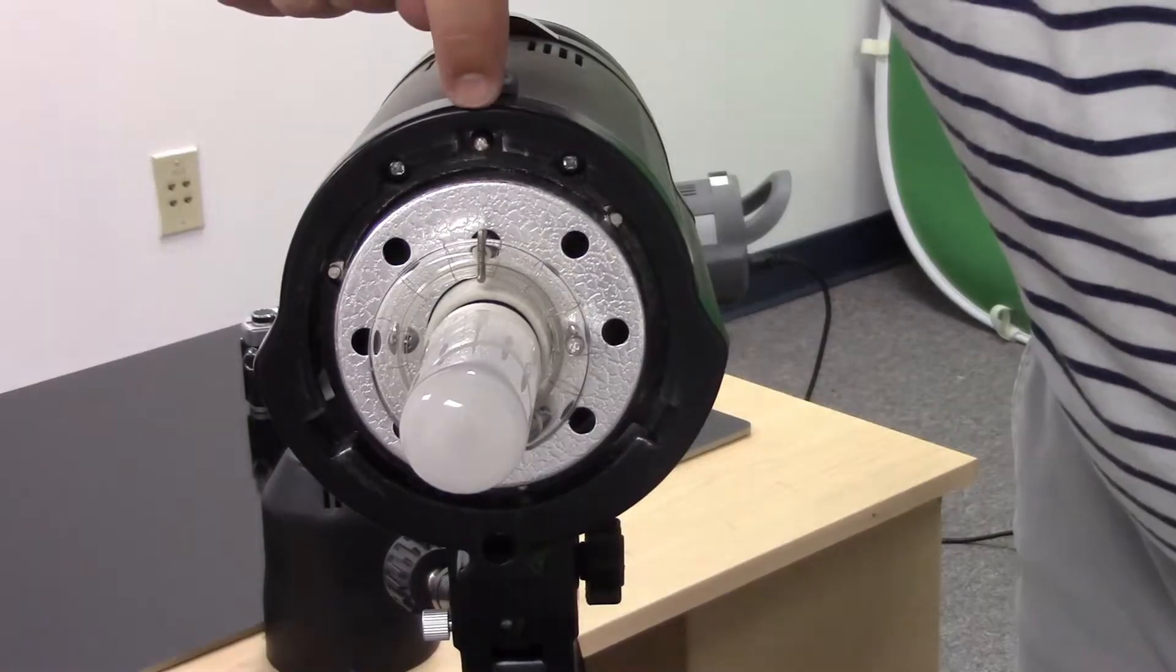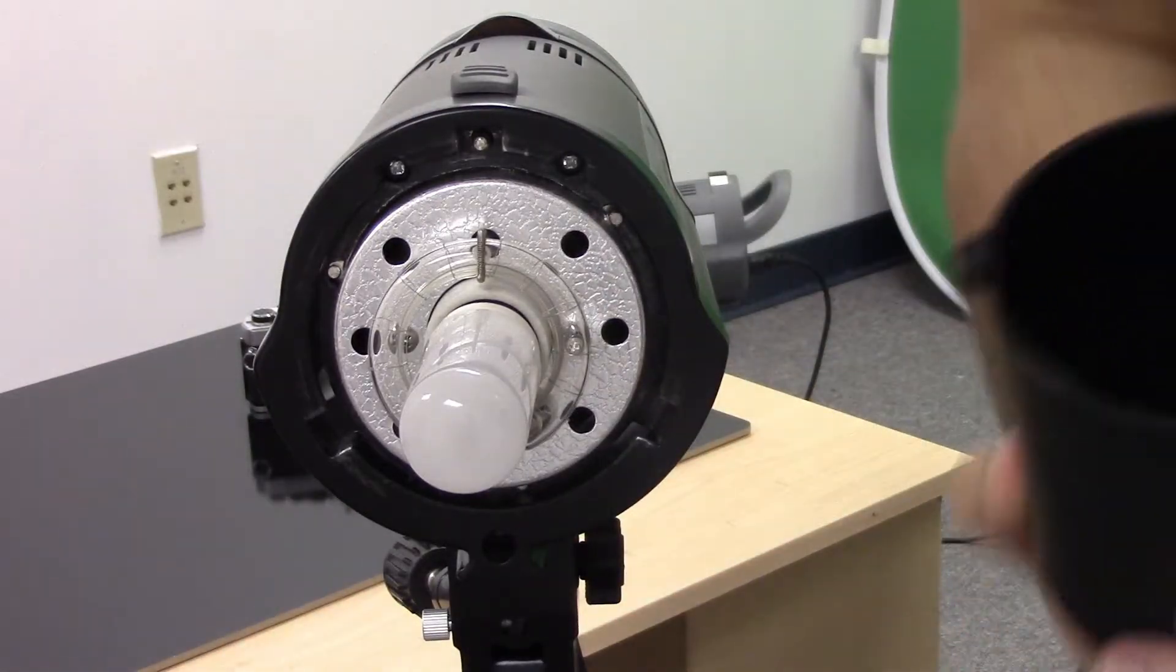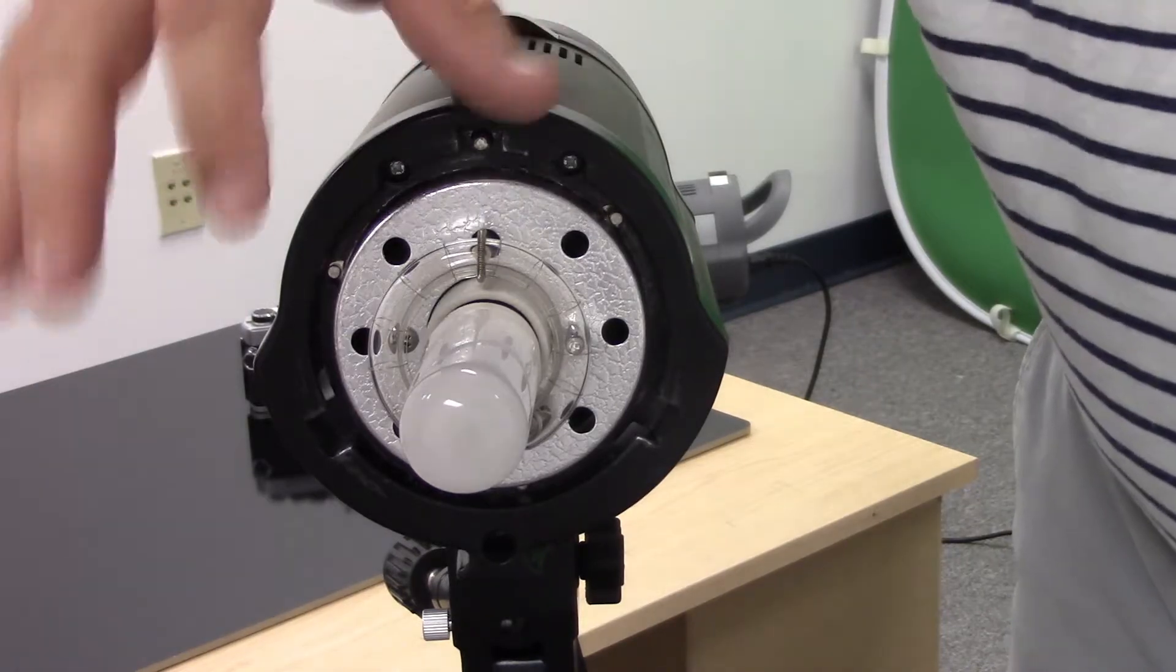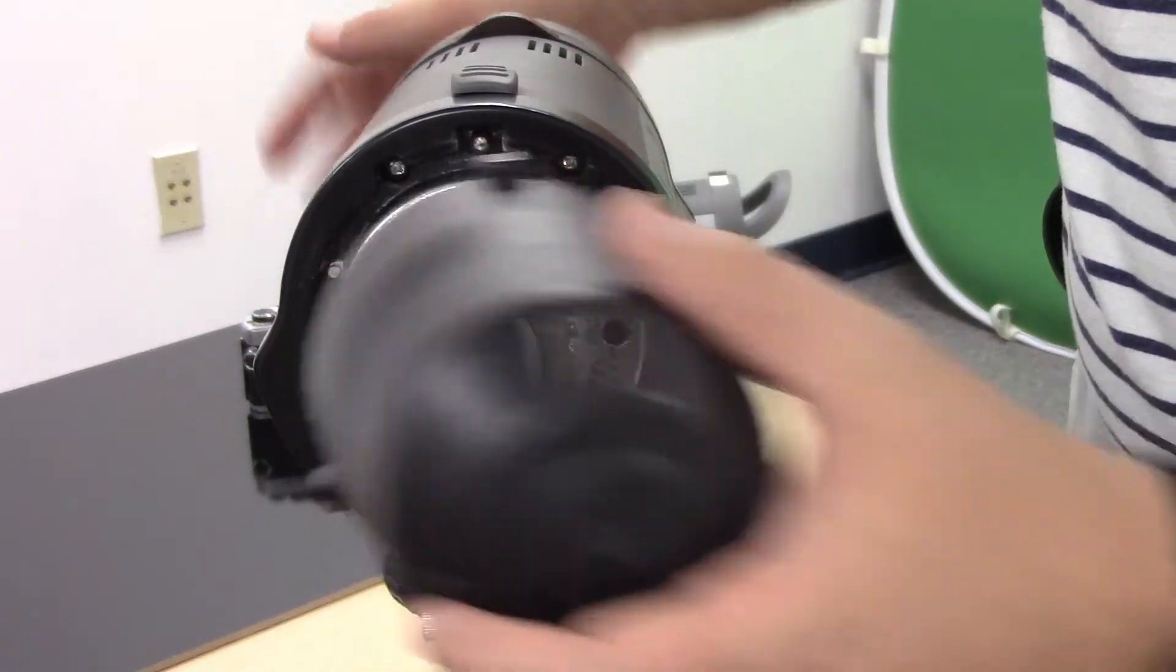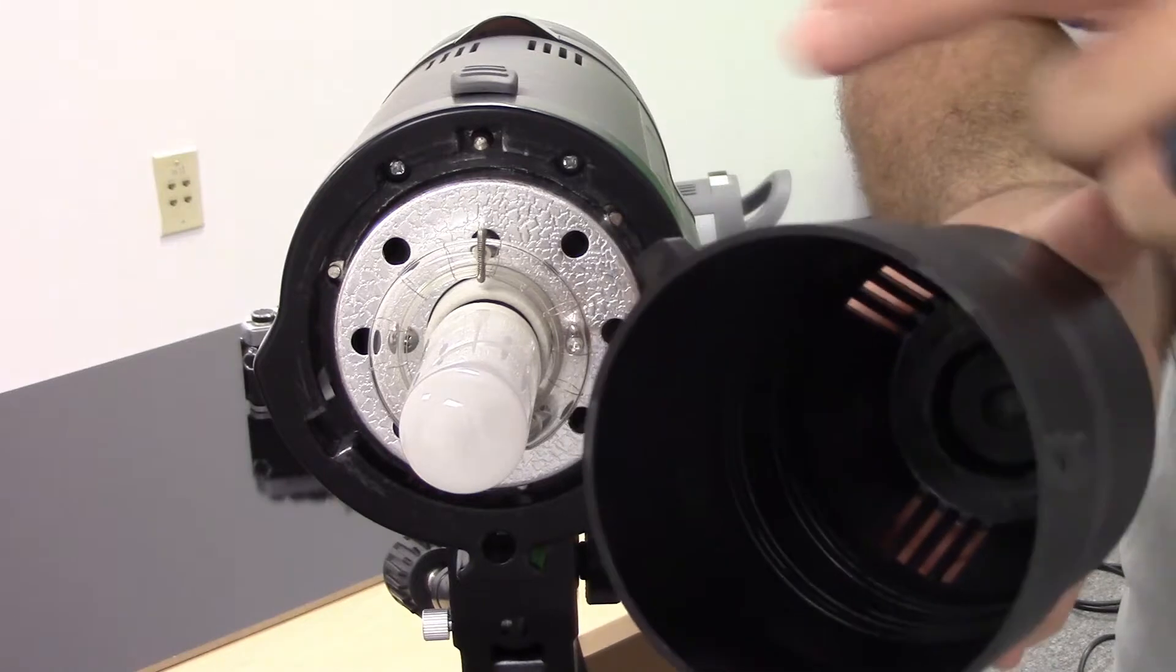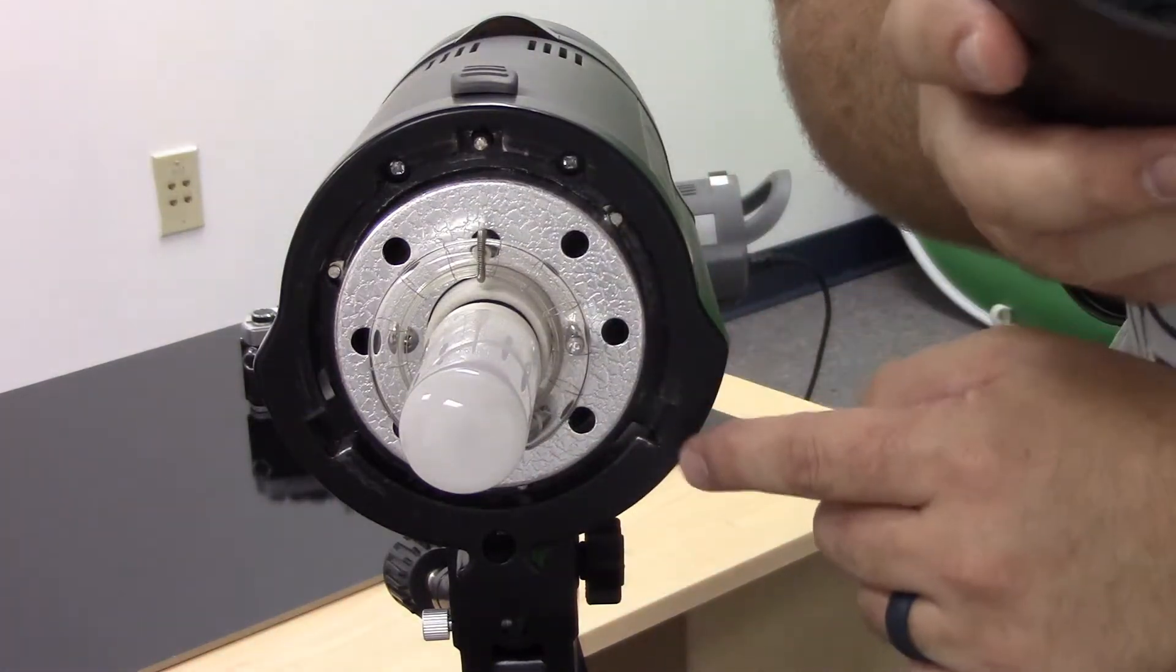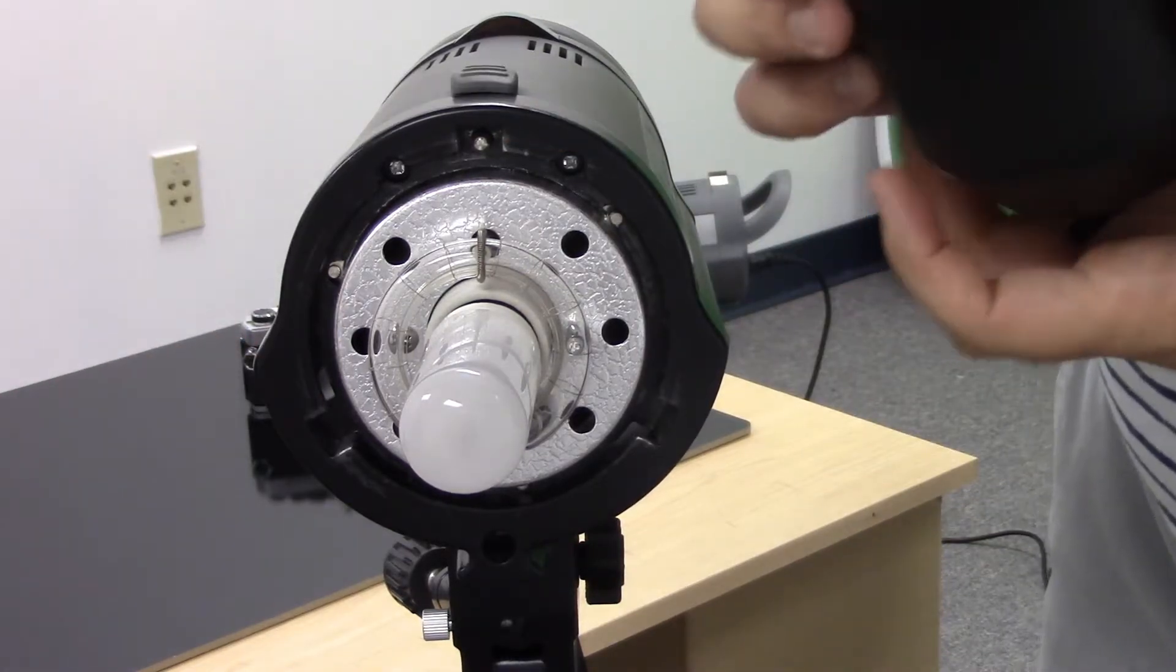This is called a bowing mount. This right here is the cover for this light. Now what we can do is when we're finished with it and after the light has cooled off, you want to put this cover back on. Now you'll see that there are three prongs to this. One here, one here and then one down here. They fit into these slots. Your modifiers will go on exactly like this as well.